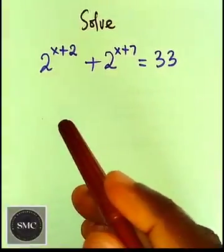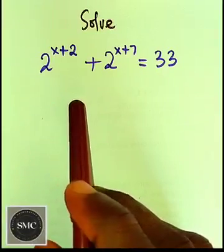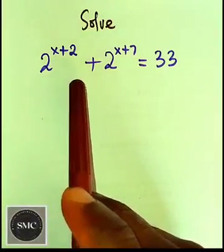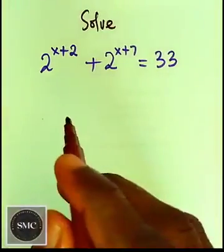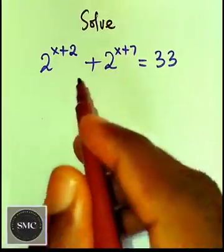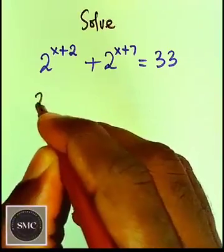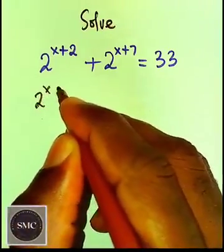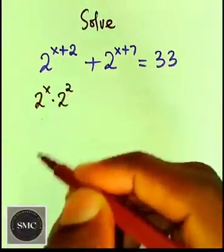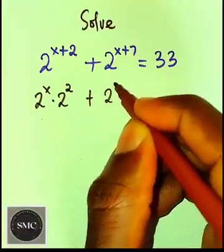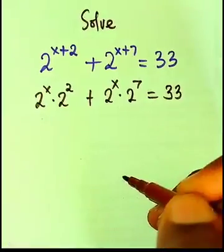Hello guys, in this tutorial today I'm going to be showing you the easiest way of solving the value of x. This is an exponential equation. From the left hand side of this equation, I can rewrite it using the law of indices as 2 to power x multiplied by 2 to power 2, then we have 2 to power x plus 2 to power 7 equals to 33.